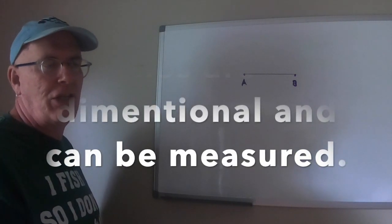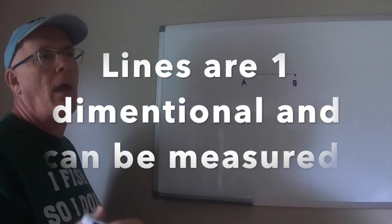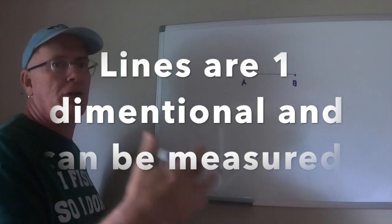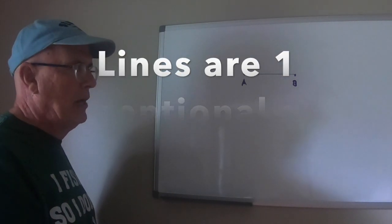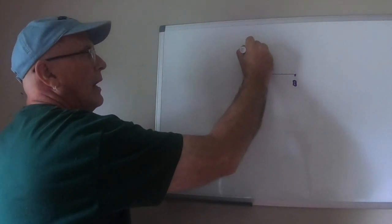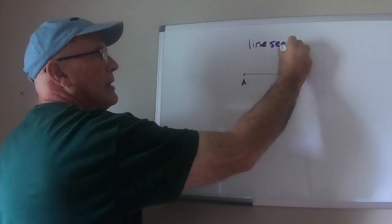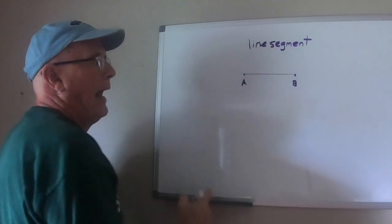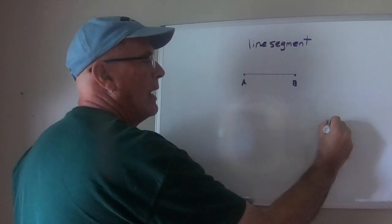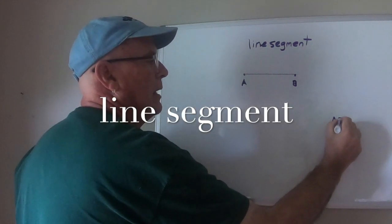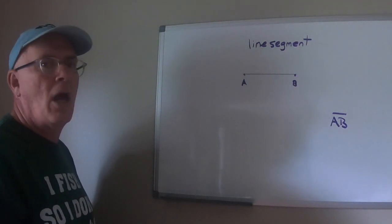We measure in inches, feet, miles, yards or millimeters, centimeters, meters, kilometers if we're using the metric system but it can be measured. This is called a line segment and this line segment could be identified as line segment A, B.